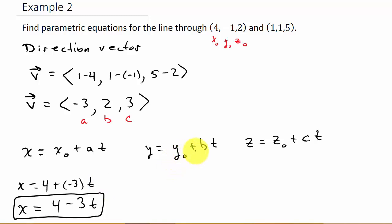Now for y, y equals y₀ which is -1 plus bt. Well b is 2 so that's 2t. And then z equals z₀ which is 2 plus ct. So c is 3, that's 3t.